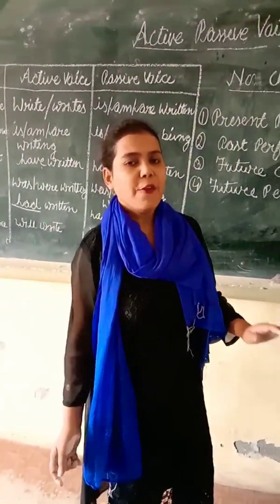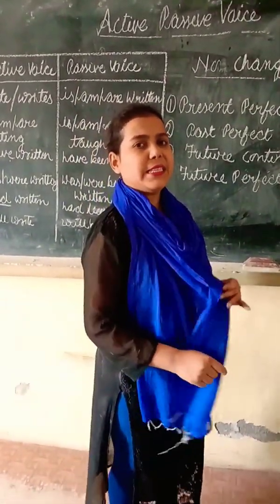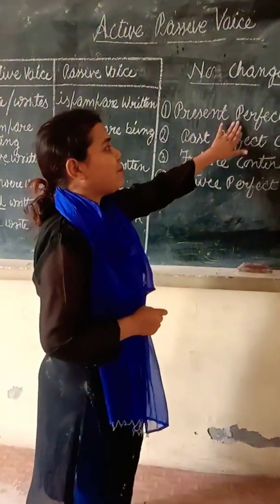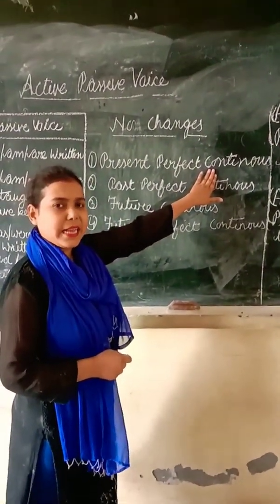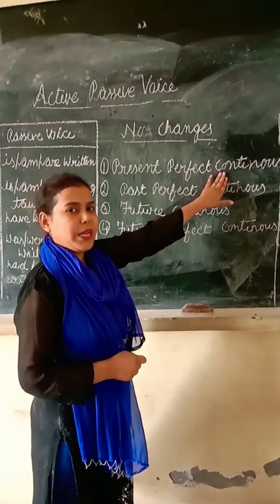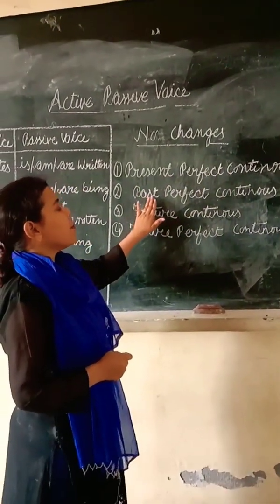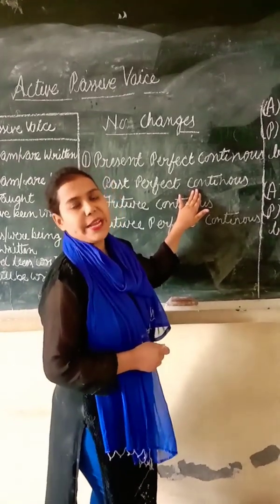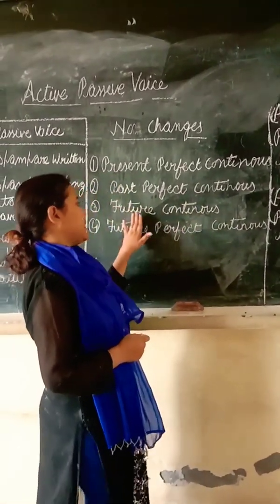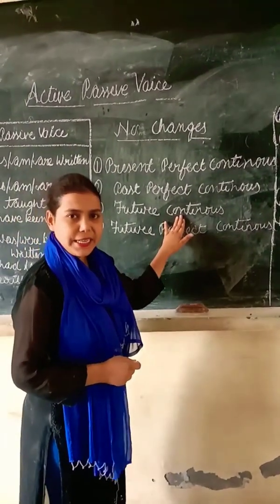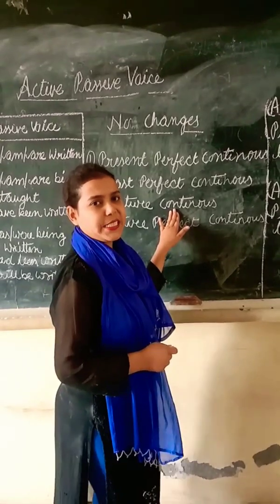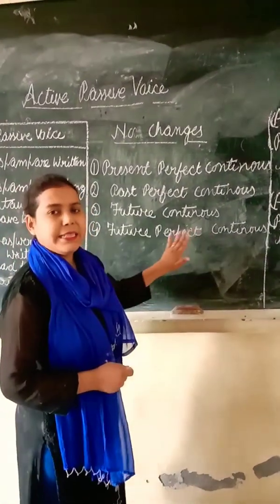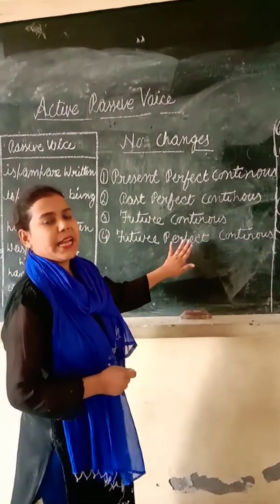Students, there are four tenses with which we will never change active voice into passive. These tenses are: present perfect continuous, past perfect continuous, future continuous, and future perfect continuous. Whenever you see active voice in any of these four tenses, please do not change it to passive.